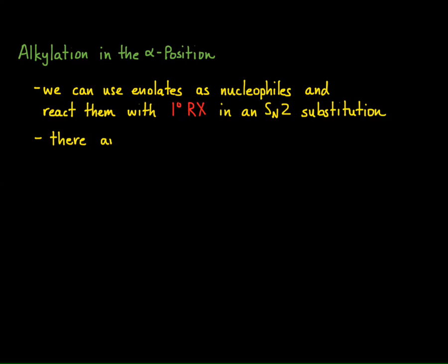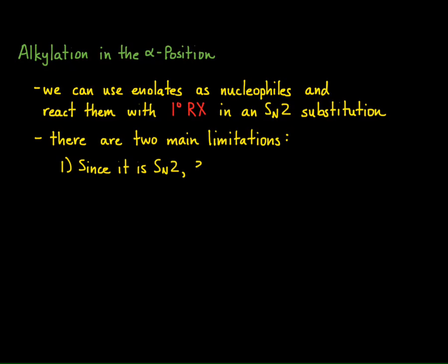There are two main limitations to these types of reactions. The first one, since we're talking about an SN2 type substitution, tertiary alkyl halides cannot be used, and many secondary alkyl halides also can't be used.